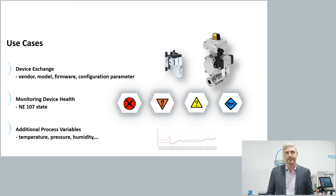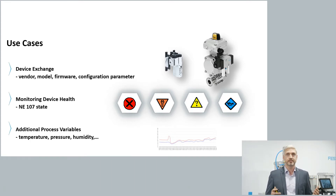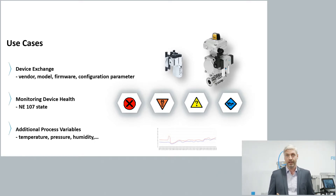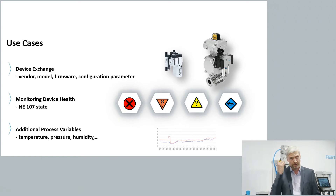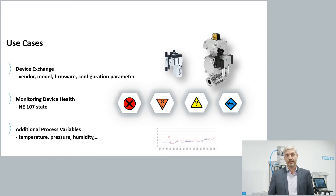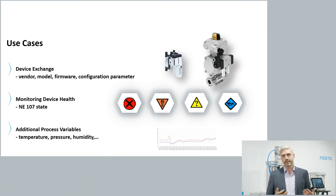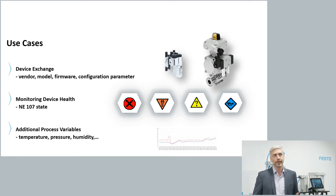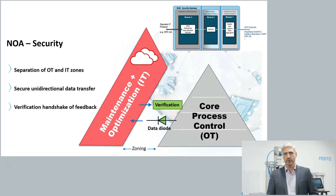The third example is quite exciting: additional process variables. Most assets today measure much more than what they actually provide to core process control. For example, a flow meter or positioner measures the temperature of your process — which can be very useful for process analytics and completing your process picture. This additional data can be provided via NOA and is essentially available for free: no additional instruments needed, just using more of the data already in your field efficiently.